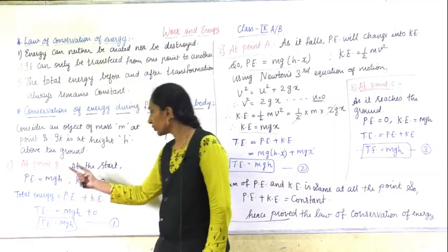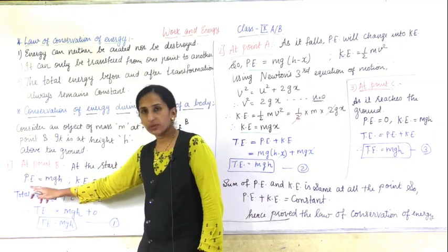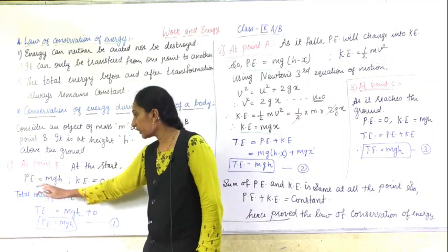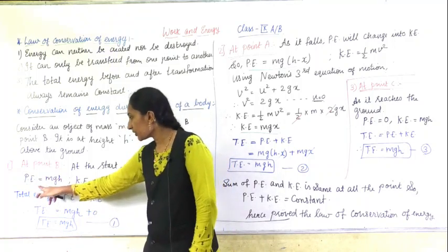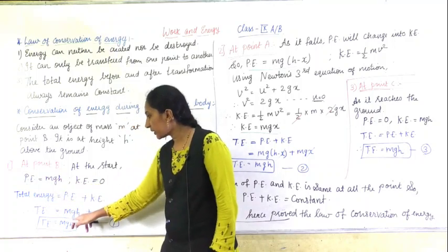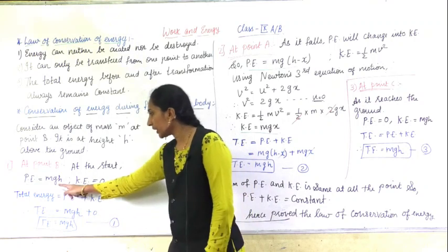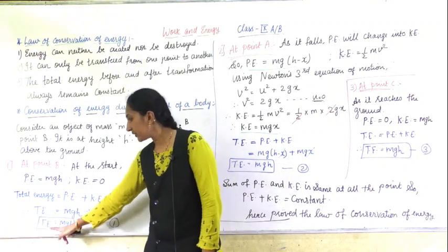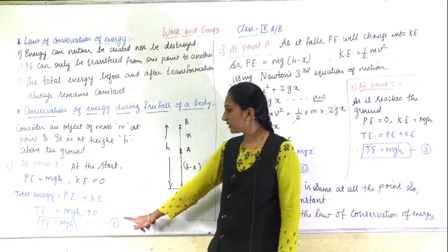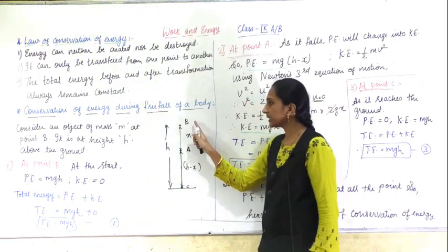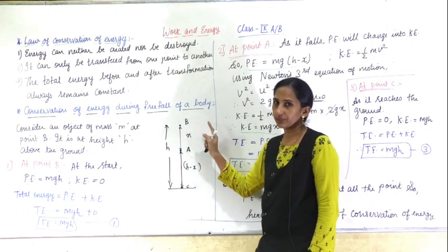The total energy formula is: total energy = potential energy + kinetic energy. So we add MGH and zero. The total energy at point B is MGH. This is equation number one.